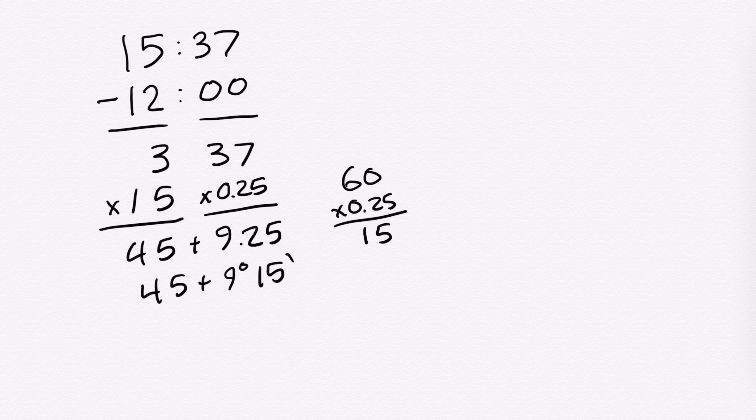So 45 plus 9 degrees 15 minutes gives us 54 degrees and 15 minutes west. Now if we got a negative answer, it would be east — because if your local apparent noon occurs before noon Greenwich Mean Time, say 10 o'clock UTC minus 12 gives minus 2, then minus 2 times 15 equals minus 30, so 30 degrees east. Negative is east, positive is west. So we got our longitude: 54 degrees and 15 minutes west.